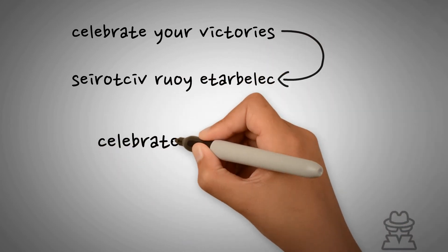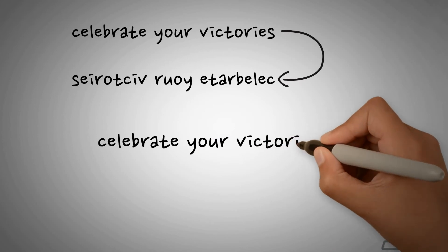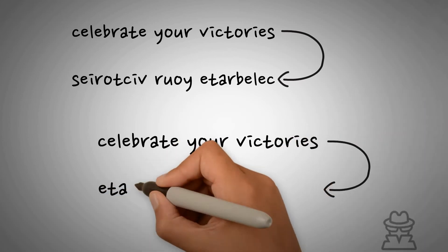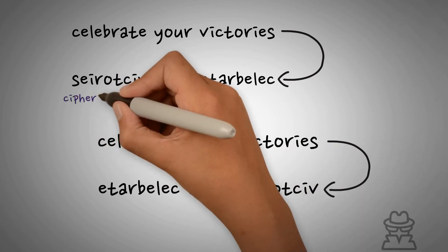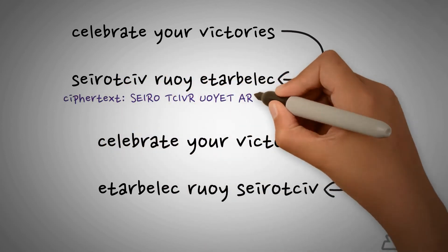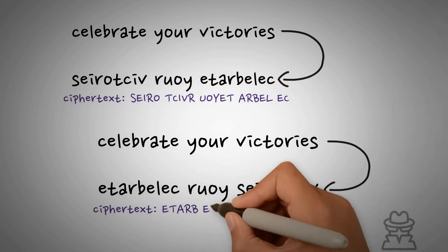Another simple transposition cipher would be to reverse the letters of each word, but not change the ordering of those words, like this. If you then group them by, say, five characters, you further obscure the real meaning.